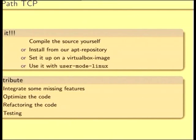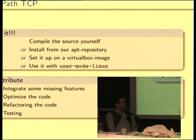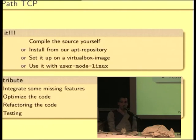You can get MPTCP from our website — download and compile it yourself. We have an APT repository with Debian packages, and we've explained how to set it up on a VirtualBox image and user-mode Linux. I have it running on my Nokia N950. If there are Android people here who want to port our Linux kernel to the Android kernel, that would be great and we can give some advice. Some missing features still need to be supported, the code can be optimized, and we want to refactor it to push it into the official Linux kernel. It's always good to have people testing it and reporting bugs.